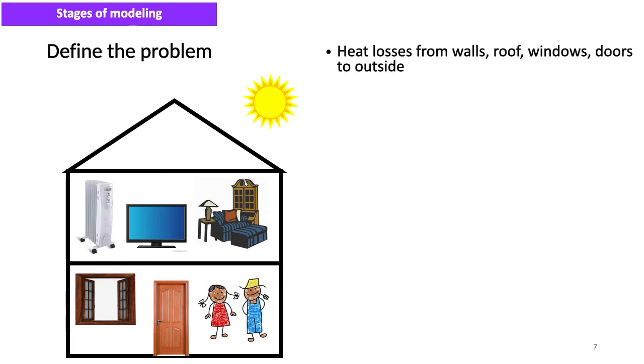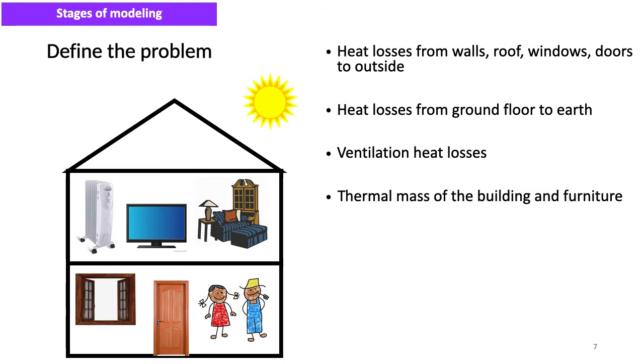We have to consider the heat losses from walls, roofs, windows, doors to the outside. Heat losses from ground floor to the earth. Ventilation heat losses. Thermal mass of the building and furniture.